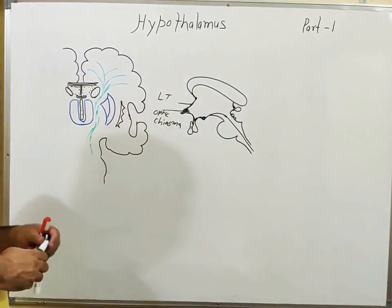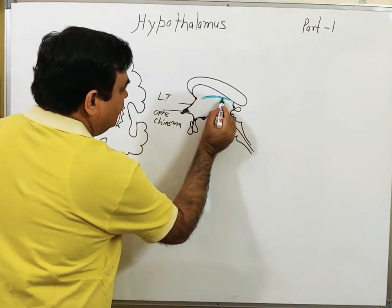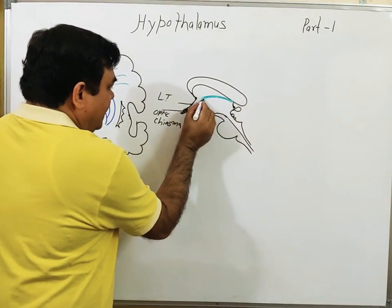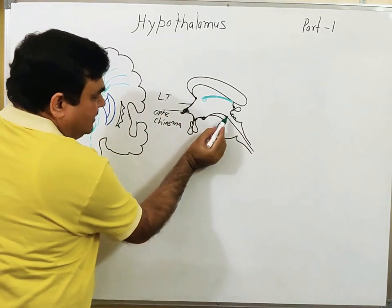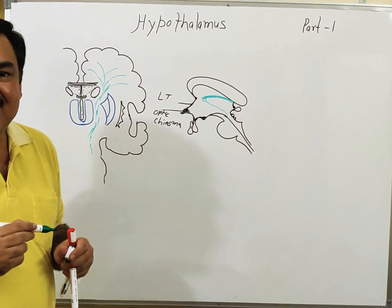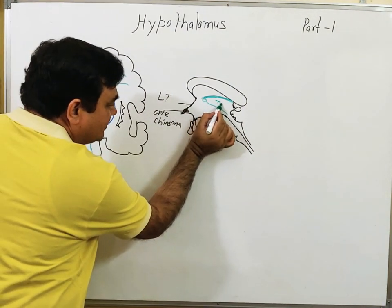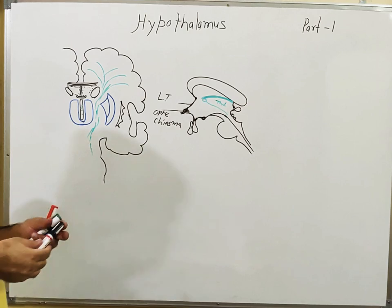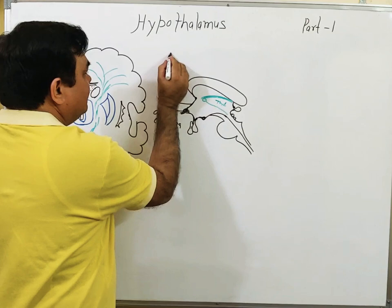Here is the position of the fornix. Here is the interventricular foramen — the foramen of Monro. This is the cerebral aqueduct. From the interventricular foramen to the cerebral aqueduct is the hypothalamic sulcus. This part is the thalamus and this part is the hypothalamus. The weight of the hypothalamus is about four grams.